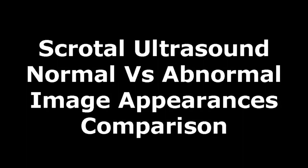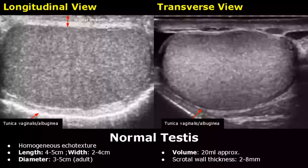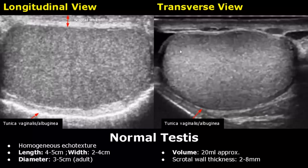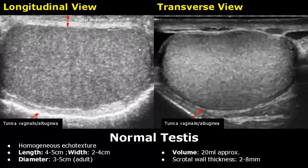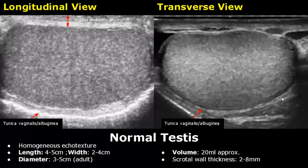Hello everyone, this is Dr. Sam and today we will study scrotal ultrasound. We have longitudinal and transverse views of the testis. In the longitudinal view the testis is more elongated. The normal testis has a homogeneous echotexture with a medium level echogenicity. The length is between 4 to 5 cm, width 2 to 4 cm, and diameter 3 to 5 cm. Its volume is approximately 20 ml and the scrotal wall thickness is between 2 to 8 mm. The tunica vaginalis and albuginea are seen together as a hyperechoic border outlining the testis.